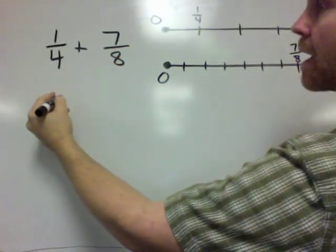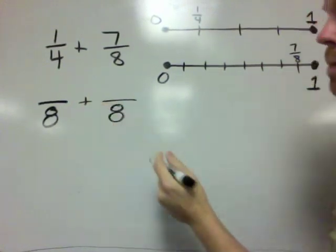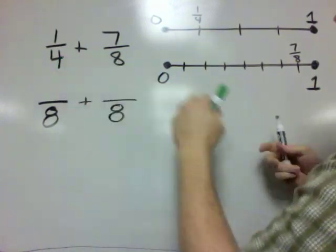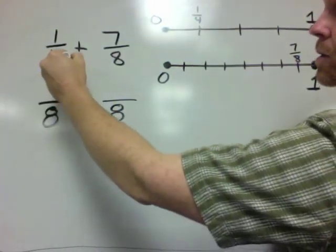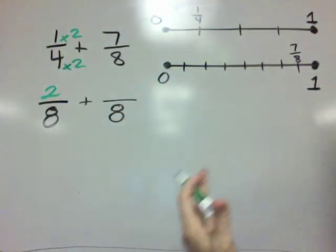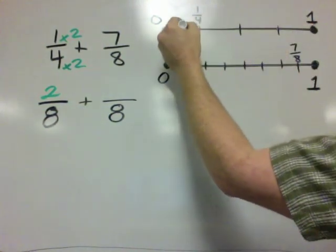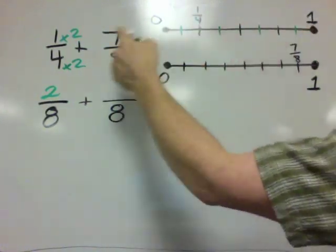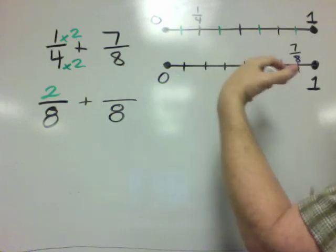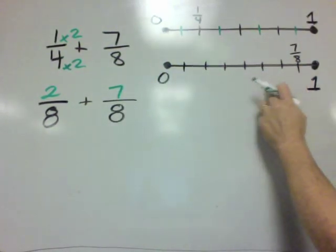In this case, there are an infinite number of common denominators that would work, but we're going to use 8 because it's a small one. We can see that to turn a 4 into an 8, you multiply by 2. And then 1 times 2 equals 2. That means up here in these intervals, you take each of the 4 intervals and cut them in half — that's why it's times 2 — and all of a sudden we get 8 intervals up here. We already have 8 intervals down here, so we're done. We can just bring the 7 straight down because 7 eighths is still 7 eighths.